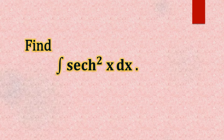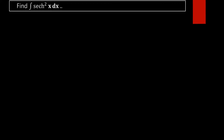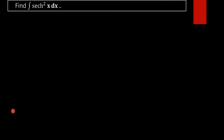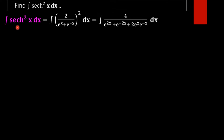Find the integral of sech²(x) dx. In order to find this integral, we rewrite sech(x) in hyperbolic form: sech(x) = 2 / (e^x + e^(-x)). So sech²(x) = [2 / (e^x + e^(-x))]² dx.